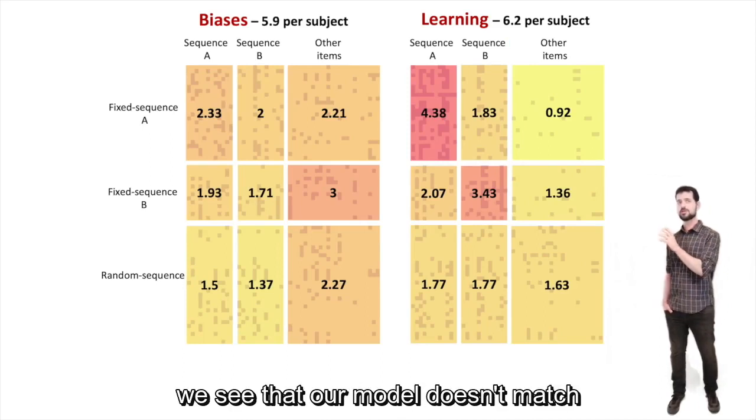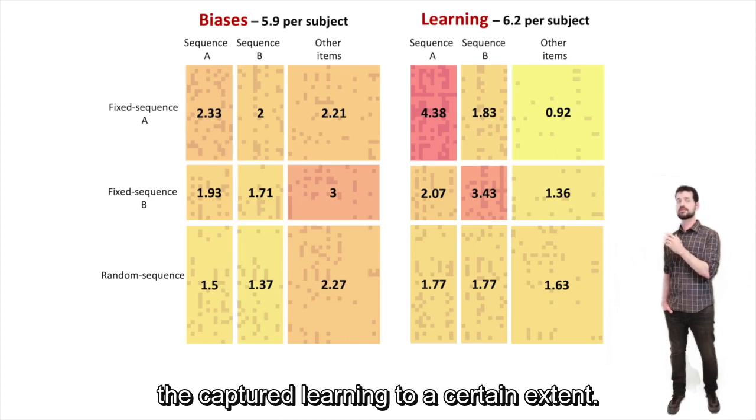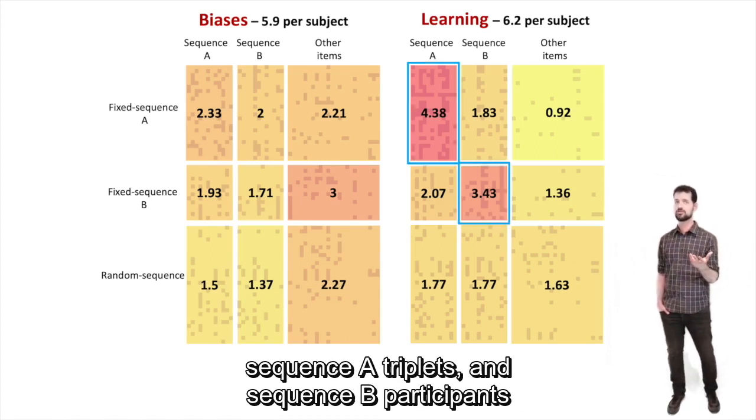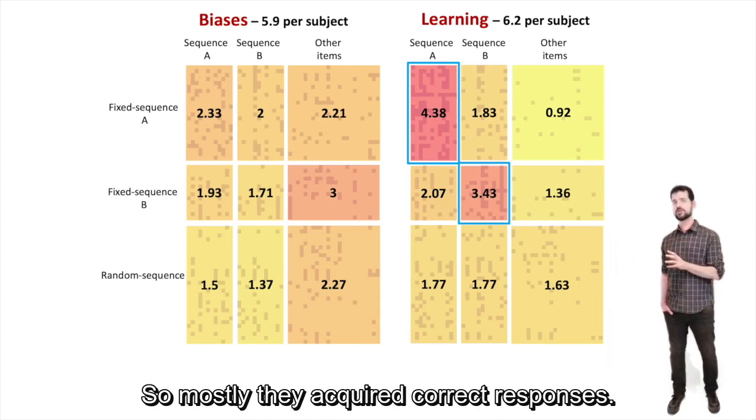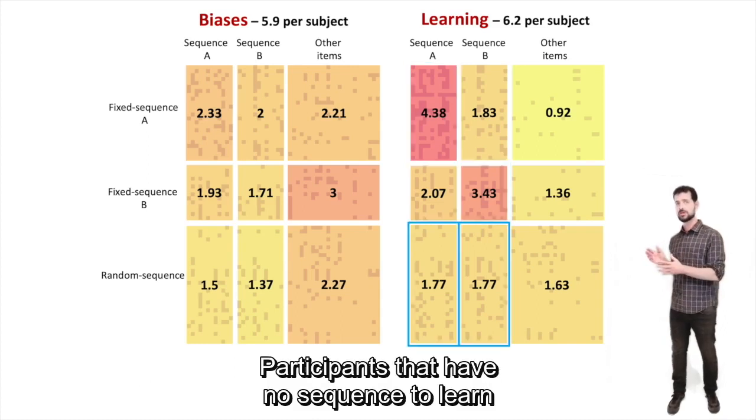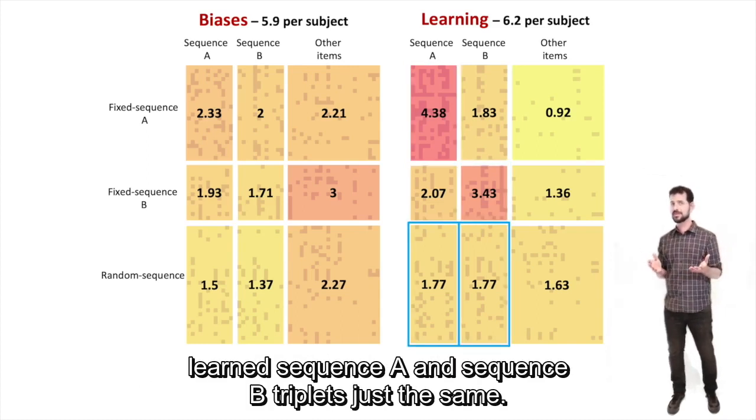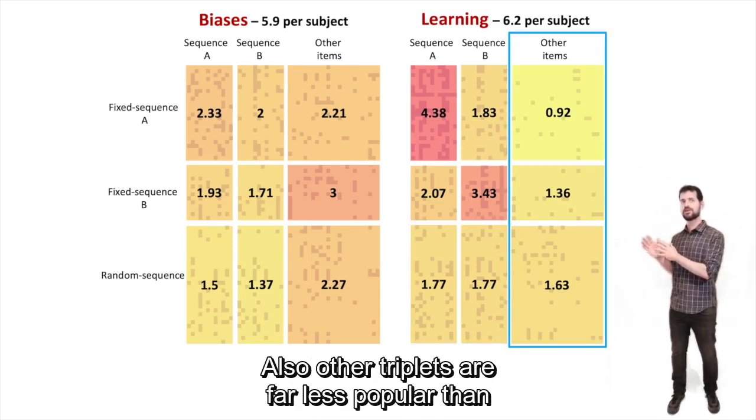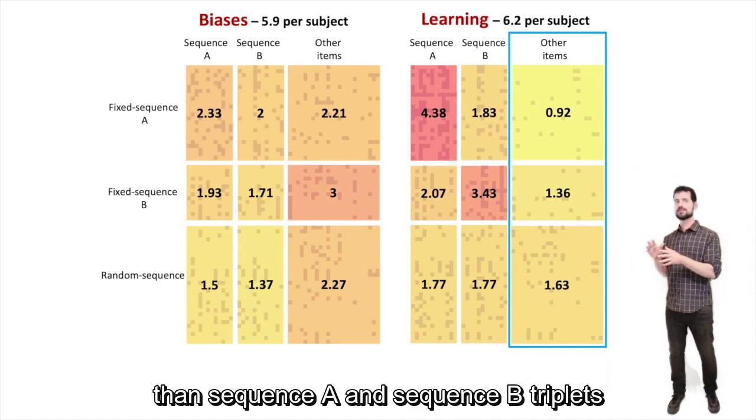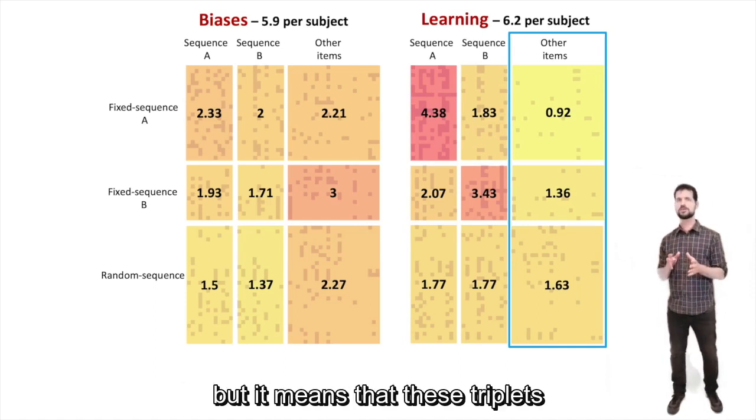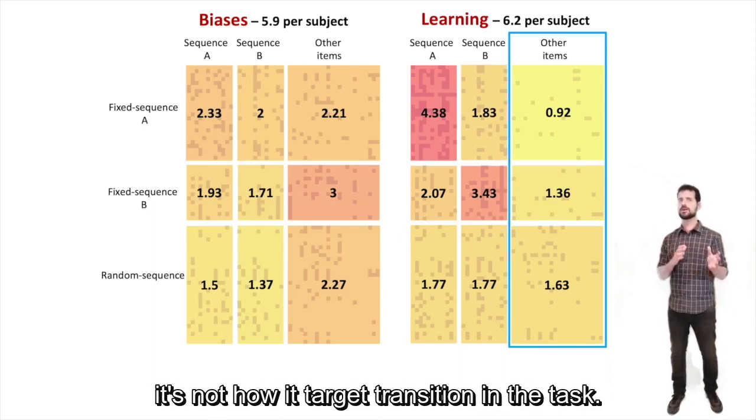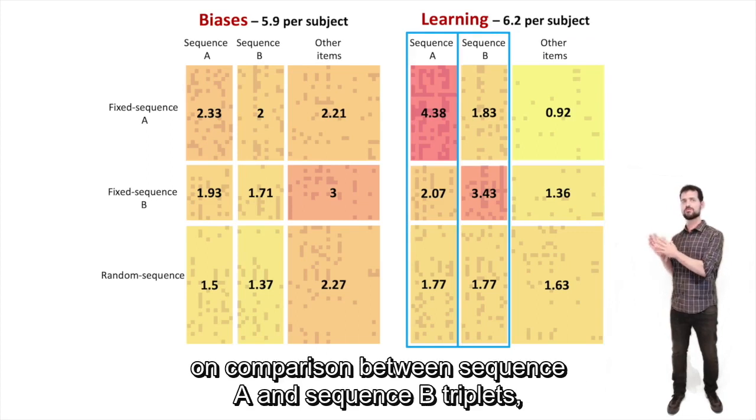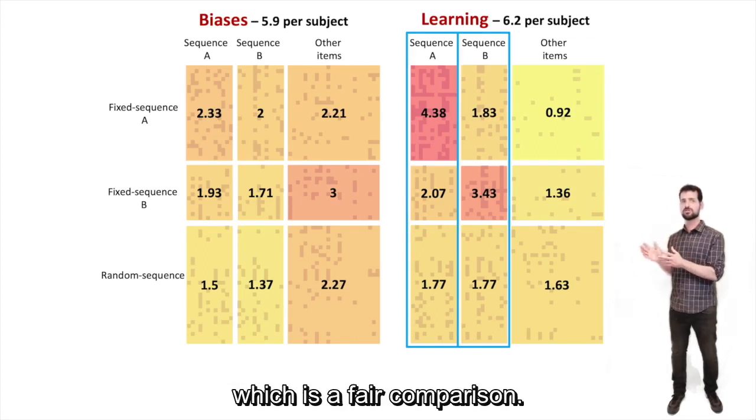Firstly, as a sanity check, we see that our model does manage to capture learning to a certain extent. Sequence A participants had predominantly learned sequence A triplets, and sequence B participants had predominantly learned sequence B triplets, so mostly they acquired correct responses. Participants that had no sequence to learn learned sequence A and sequence B triplets just the same. Also, other triplets are far less popular than sequence A and sequence B triplets. This has to do with the task grammar, which we won't go into this talk, but it means that these triplets include a transition between targets that participants learned very early on is not how targets transition in this task.